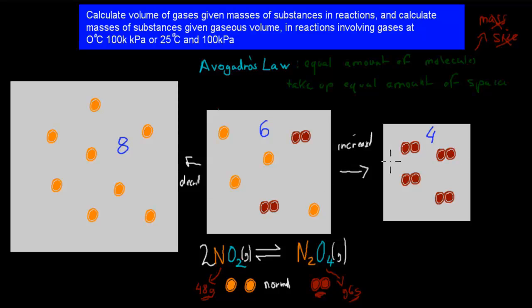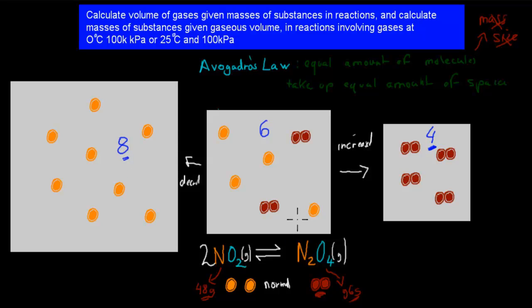When we increase the pressure by making it smaller, the equilibrium went into whatever shape it could find that would decrease the number of molecules. If we decrease the pressure, it would go into whatever shape would increase the number of molecules. But what kind of molecules — that isn't important.